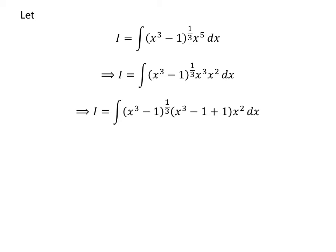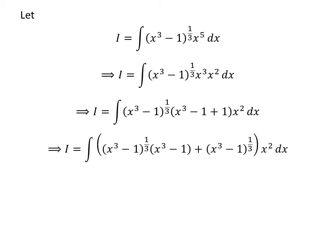Subtracting a constant and adding the same constant to an expression does not change the value of the expression. So I is equal to the integral of cube root of cube of x minus 1, times cube of x minus 1 plus 1, times square of x with respect to x. Expanding the integrand gives us I is equal to the integral of cube root of cube of x minus 1 times cube of x minus 1, plus cube root of cube of x minus 1 times square of x, with respect to x.